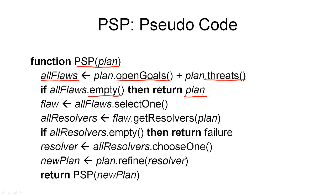But if there were flaws left in the plan, then we can now choose a flaw — the flaw we want to remove from the plan next. And once we have selected one of the flaws, we can compute all possible resolvers for this flaw in the current plan. If the set of resolvers is empty, that means there's no way to remove this flaw from the plan, and we can return failure, because this partial plan can never be refined into a solution plan. But if there were resolvers in the set, then we have to choose one to remove the flaw from our plan. The next step is to generate a new plan, which consists of applying the resolver to our current plan.